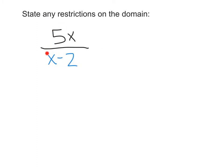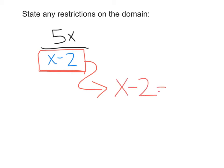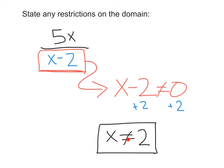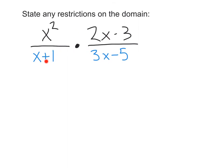Here we've got 5X over X minus 2. We know that the denominator X minus 2 cannot equal 0. So we take the whole denominator and set X minus 2 cannot equal 0. Solving — adding 2 to each side — we get the restriction X cannot equal 2. We can check: plugging in 2 gives 2 minus 2, a denominator of 0, which is exactly what we can't have.